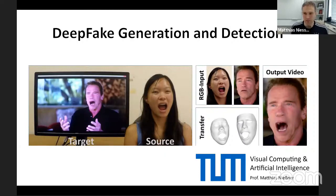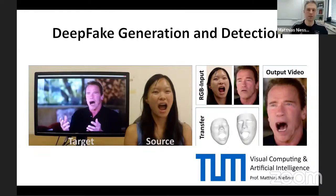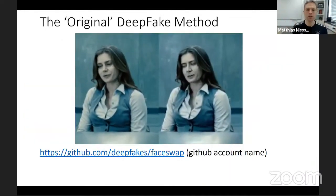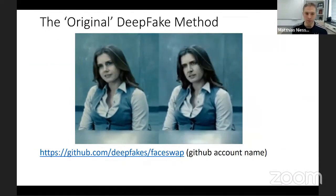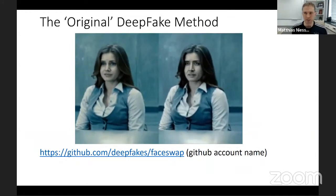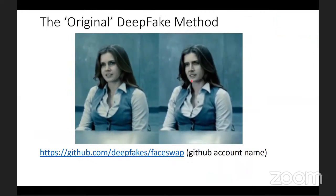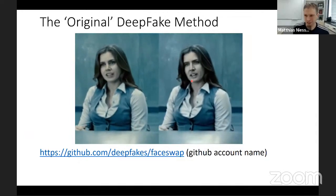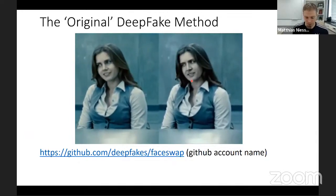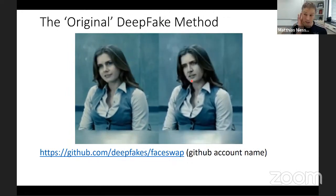I want to combine this talk in both angles: first, how do generations of deepfakes and generally facial editing videos work, and then what are the weaknesses — how can we detect it and exploit those weaknesses? Deepfakes is a very popular term; it's been a bit blown up in the media. There was one original deepfake method, which was a method to do facial replacement based on an autoencoder technique where you encode and then replace the decoder respectively, published on GitHub rather than at a conference. This gave the deepfake terminology its name.